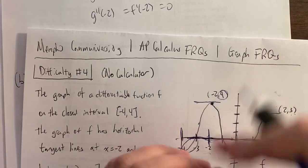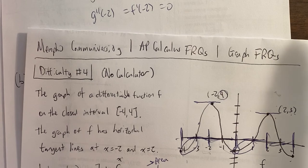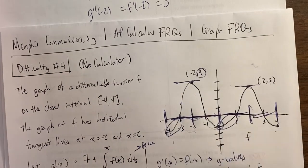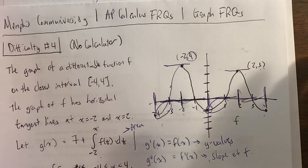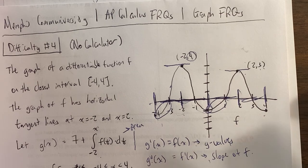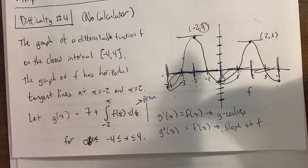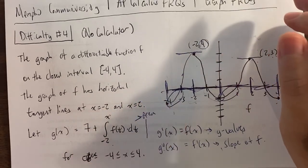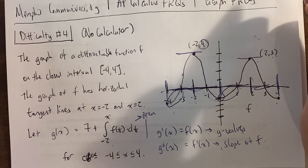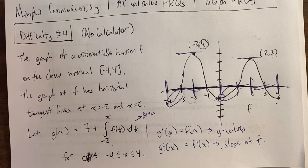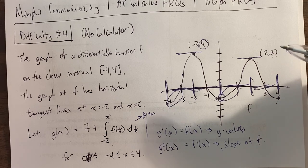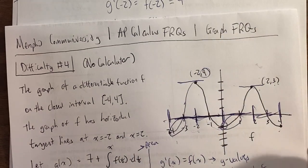Difficulty number 5 is another question where f is given and an f prime graph is shown — similar to difficulty 3 but with some wacky elements. Later in this series we'll see a graph free response question that's particle motion, and we'll have harder functions too. We appreciate your support by watching, liking, and subscribing. These graph free response questions appear every single year — hopefully by finishing difficulty 1 through 10, you'll be very confident on the graph free response question on the AP Calculus exam. Thanks for watching.